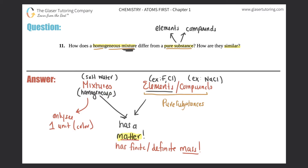Another similarity is that for both homogeneous mixtures and for elements and compounds, you have basically the same single unit of color. For example, sodium chloride — table salt — looks white. Soft drinks are an example of a homogeneous mixture that also has one single color. So the three similarities are: they all have matter, they all have a mass, and they appear as a single unit of color.